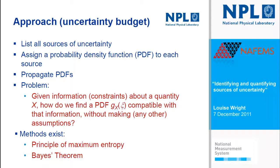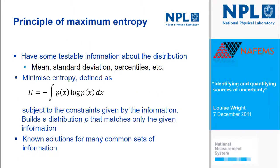Fortunately, there are methods that exist — the two main ones being the principle of maximum entropy and Bayes' theorem. The principle of maximum entropy is valuable when you've got some testable information about the distribution, meaning information you can get directly from the distribution — things like means, standard deviations, percentiles — not direct samples. The principle of maximum entropy minimises the entropy subject to the constraints given by the information, where entropy is a generalisation of the form used in information theory. This method enables you to build a distribution that matches only the given information, so you're not adding any further assumptions.